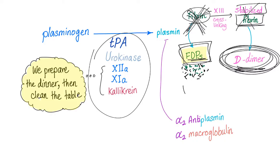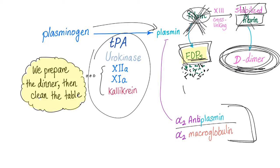If those factors activate plasminogen into plasmin, who will inhibit plasmin? Because plasmin can be excessive — too much plasmin is too bad. We have the alpha-2 antiplasmin and the alpha-2 macroglobulin, not to be confused with the beta-2 microglobulin in multiple myeloma.